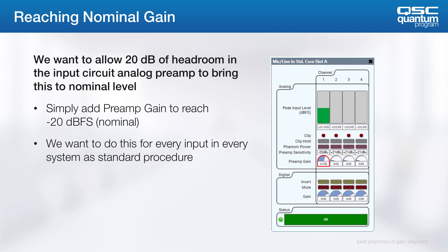That's it. You're going to get a far better result if you calibrate every preamp so that you have a uniform negative 20 DBU nominal, rather than having to compensate later in the signal chain in crosspoints and matrix mixers. This is true for every input to the system.